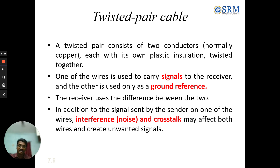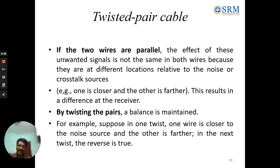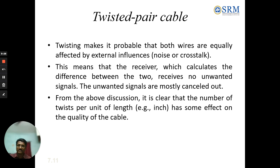If the two wires are parallel, the effect of unwanted signals is not the same on both wires because they are in different locations relative to the noise or crosstalk source. By twisting the pair, a balance is maintained — in one twist, one wire is closer to the noise source and the other is farther; in the next twist, the reverse is true. Twisting makes it possible that both wires are equally affected by external interference, so the receiver calculates the difference and the unwanted signals are mostly cancelled out.